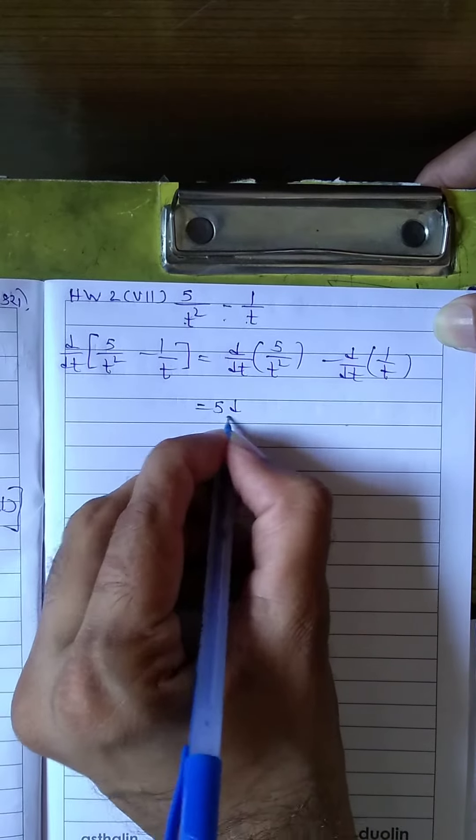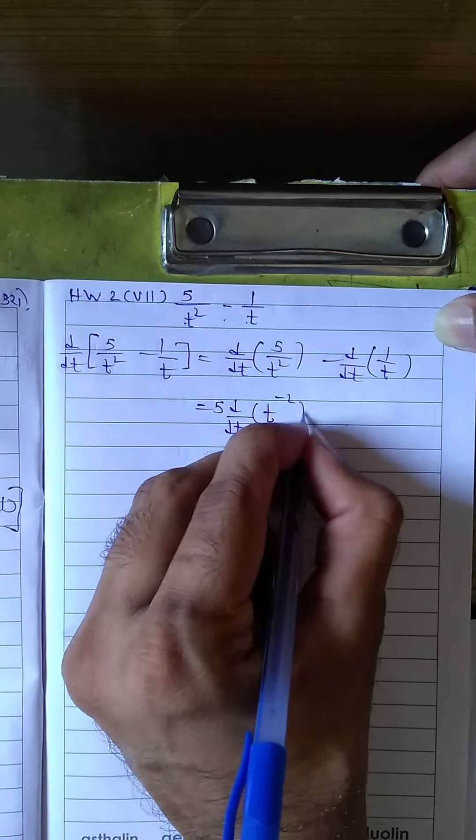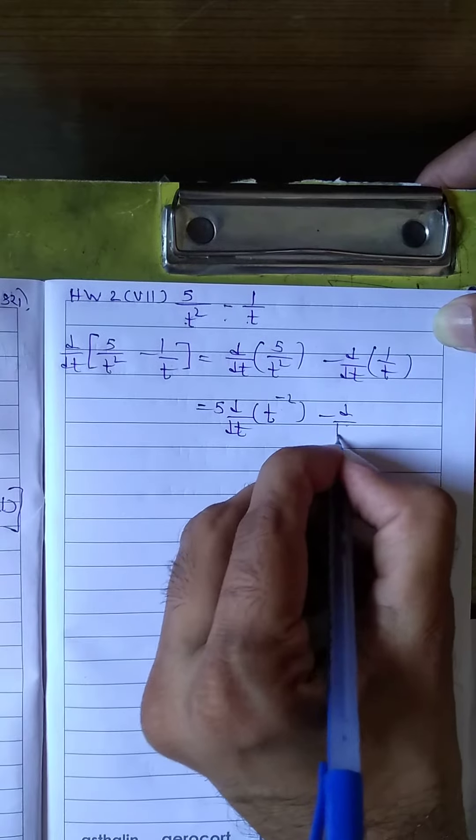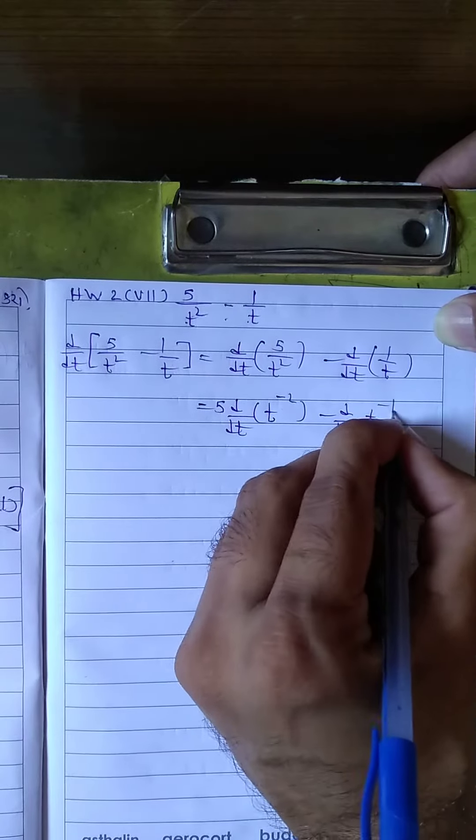Taking 5 common, we get d by dt of t raise to minus 2, minus d by dt of t raise to minus 1.